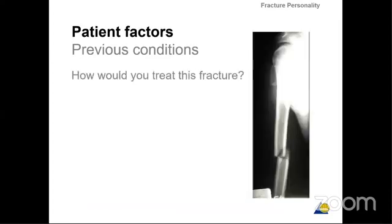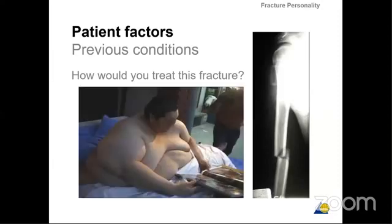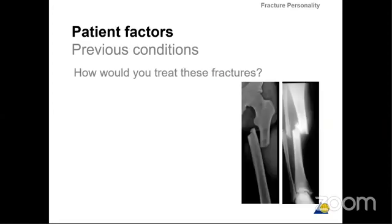How would you treat this fracture? For example, this is a midshaft humeral fracture. When you see it in a meeting, they will tell you it's a transverse humeral fracture — very easy, put a plate, put a nail. But it depends on the patient factor. It is not the same treatment if the patient is obese. If you have a very obese patient, how do you treat it? Would you put a plate? Would you put a nail? How do you set up your patient? Do you have the resources in the OR to position this patient on a table to place the plate or the nail? These are all factors you have to take into consideration.